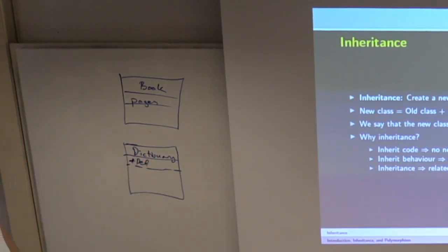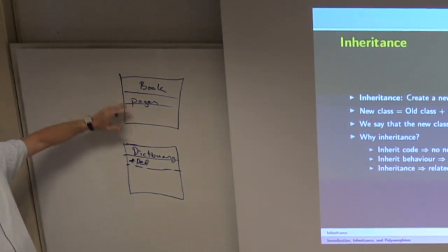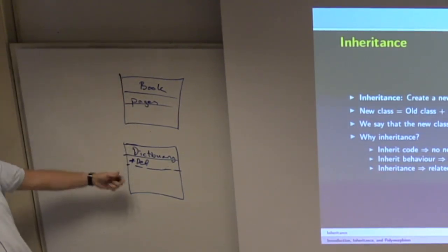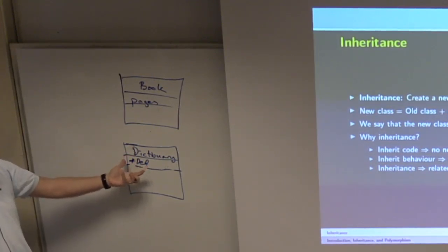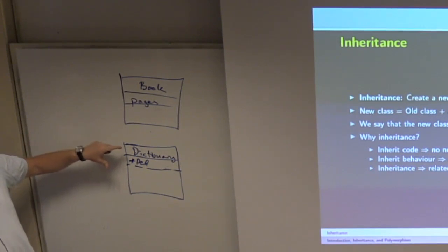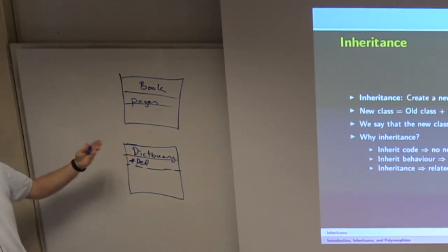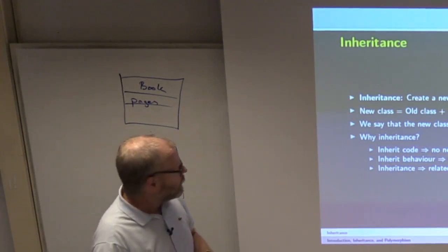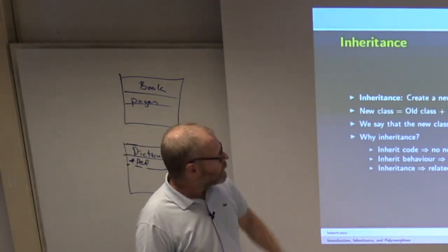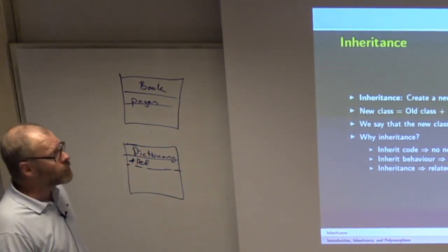We are creating a new class based on another class. Since Dictionary inherits all the properties from Book, we can often treat a Dictionary as a Book — it can do everything that Book can do, but also a few things more. So whenever the program is expecting a Book, we can also give it a Dictionary. We are saying that Dictionary inherits from the old class Book.